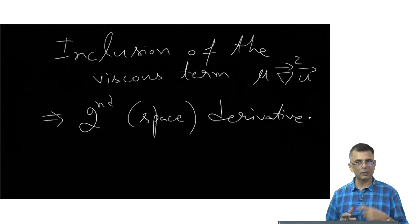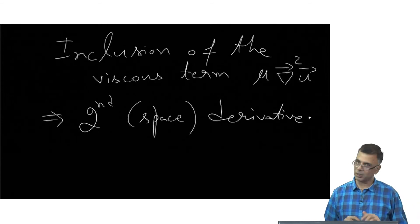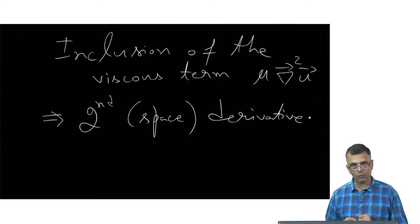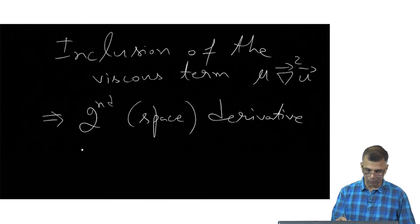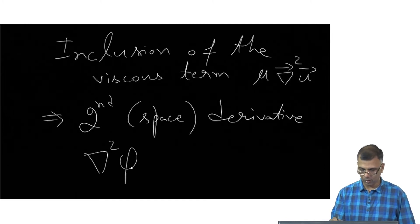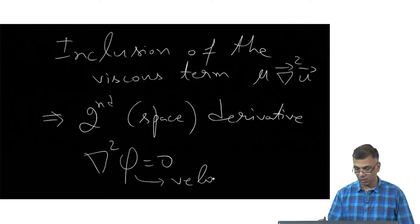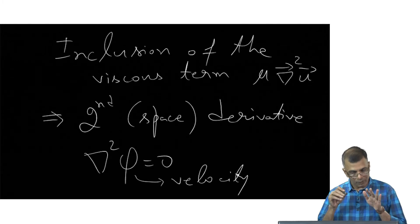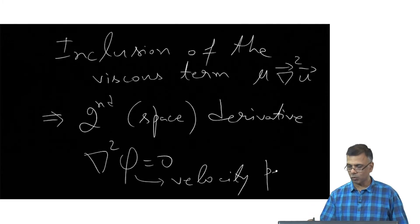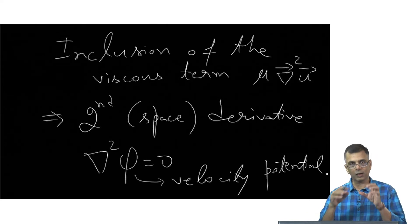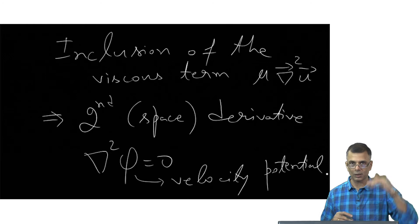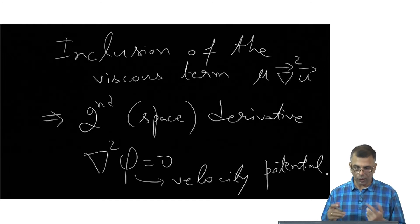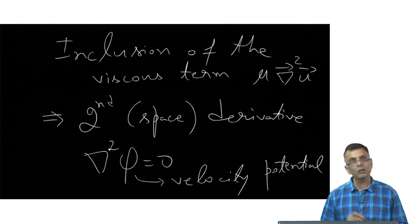Recall when we were talking about the equation where this was the velocity potential — that was for inviscid flows. Even though it did not have the viscous term, the equation was del²φ = 0, and we had two boundary conditions: one on the surface of the sphere, and one boundary condition at infinity. Sure enough, you need two boundary conditions because you have two derivatives.